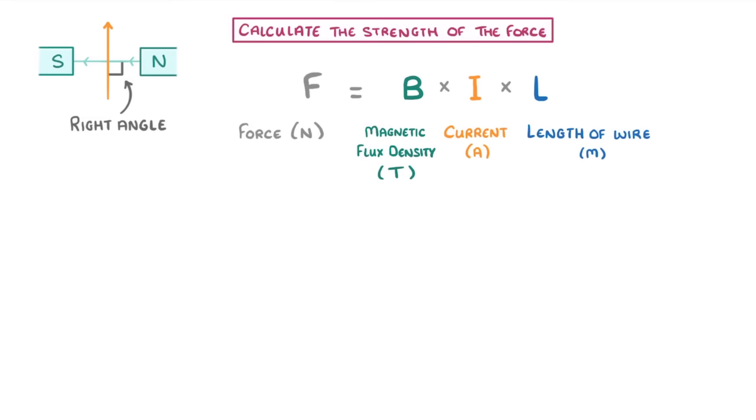So let's imagine that we had a 10cm piece of wire with a 5A current flowing through it, and we placed it at 90 degrees into a magnetic field that had a magnetic flux density of 0.4 teslas. What force would it experience?